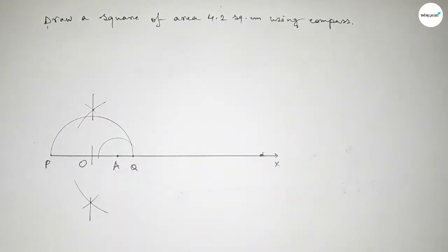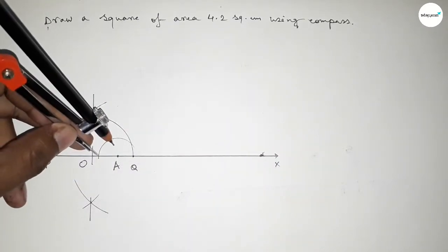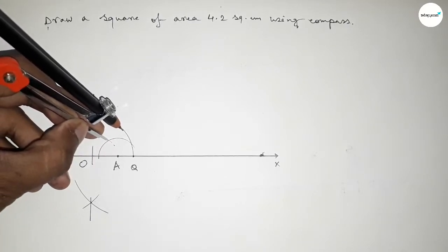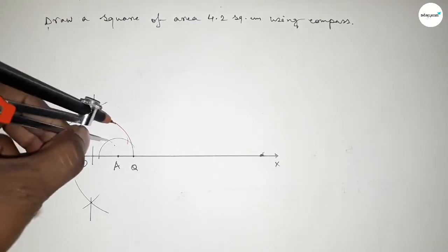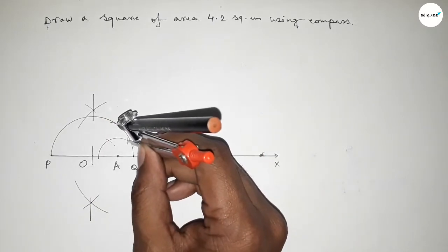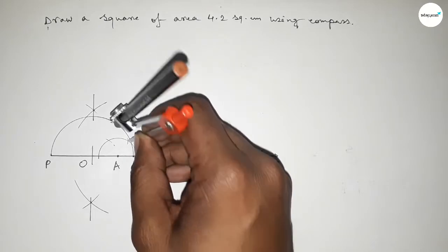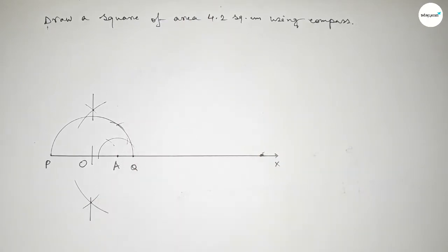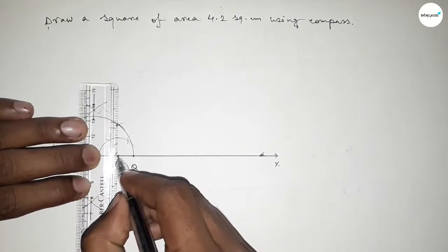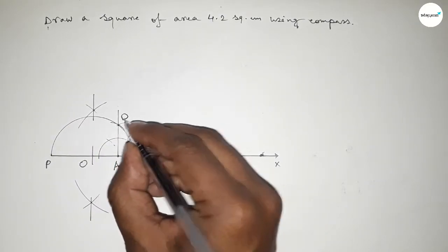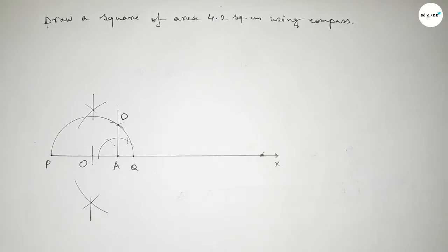With the same compass length, mark off equal arcs along the first arc, then place the compass at those marked points and cut arcs again with the same length. Both curves intersect at a point — join this line, which meets the semicircle at point D.